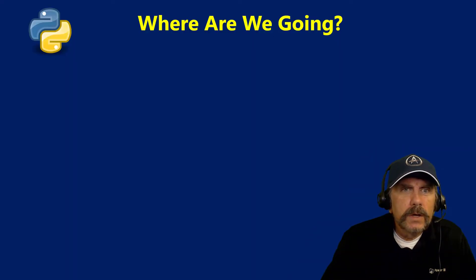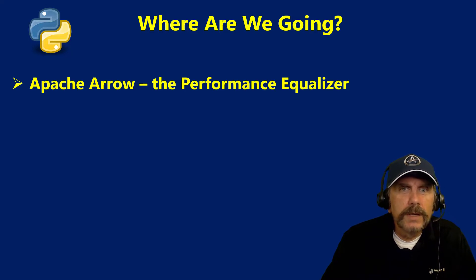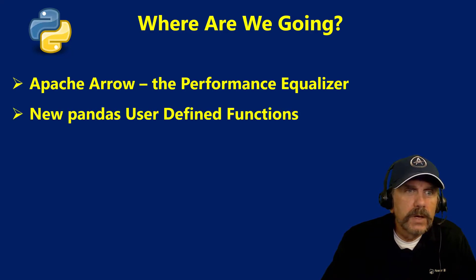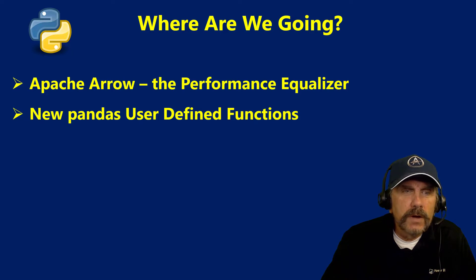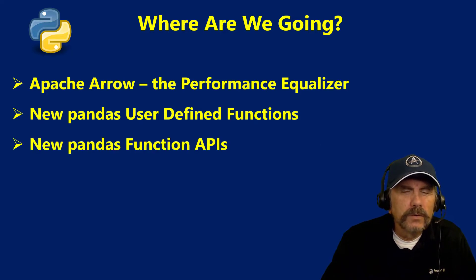What are we going to be doing here? We're going to be talking about Apache Arrow, which I call the performance equalizer, new pandas user-defined functions, and new pandas function APIs, which is a little confusing, but I'll talk about that in a minute.